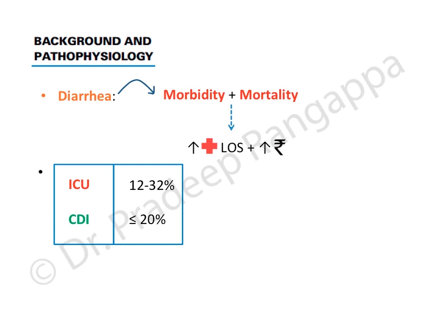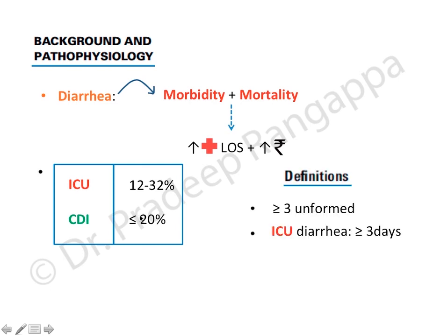The definition of ICU diarrhea, which is nosocomial diarrhea, is having more than or equal to three unformed stools. It is called nosocomial or ICU-acquired diarrhea when it develops after three days of admission to the ICU - the patient should have been in the ICU for equal to or more than three days.